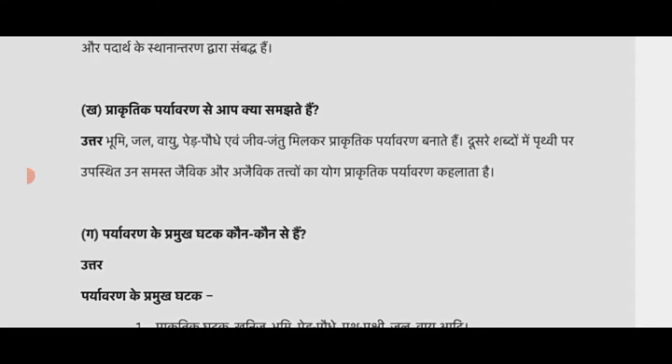प्रश्न: प्राकृतिक पर्यावरण से आप क्या समझते हैं? इसका उत्तर: भूमि, जल, वायु, पेड़-पौधे एवं जीव-जंतु मिलकर प्राकृतिक पर्यावरण बनाते हैं। दूसरे शब्दों में, पृथ्वी पर उपस्थित उन समस्त जैविक और अजैविक तत्वों का योग प्राकृतिक पर्यावरण कहलाता है।